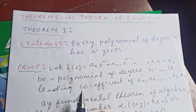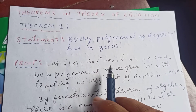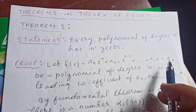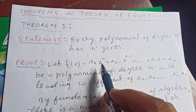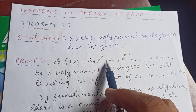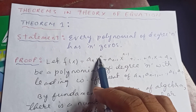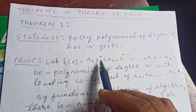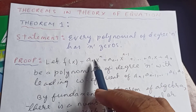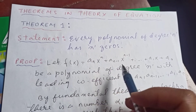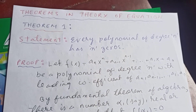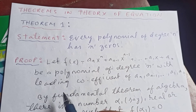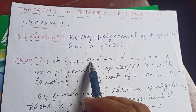To prove this, let f(x) = aₙxⁿ + aₙ₋₁xⁿ⁻¹ + ... + a₁x + a₀. This is a polynomial of degree n, meaning the highest power is n. We are going to show that this polynomial of degree n has n zeros, meaning n roots, with leading coefficient aₙ.